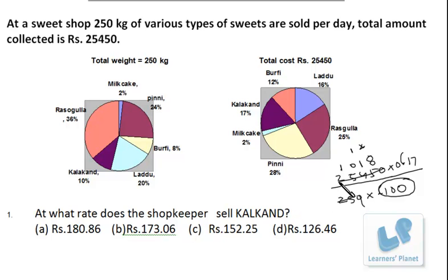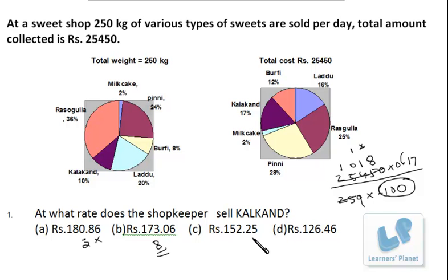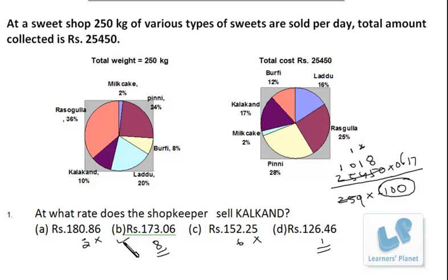Checking the answer choices using digital root: for one option, 9 cancels, then 8+6=14, digital root is 5 — incorrect. Another option: 7+3=10, 1+1=2, then 2→5 — incorrect. One option gives digital root 8 — this matches! Another gives 5+6+7+8+9=cancelled, 6+4=10, digital root 1 — incorrect. Since only one option has digital root 8, that must be the correct choice. No further calculation needed.